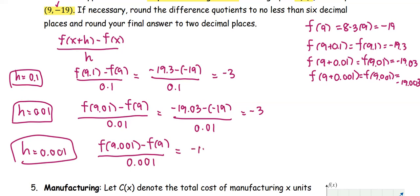which is -19.003 - (-19), all divided by 0.001, and it comes out to be the same number.